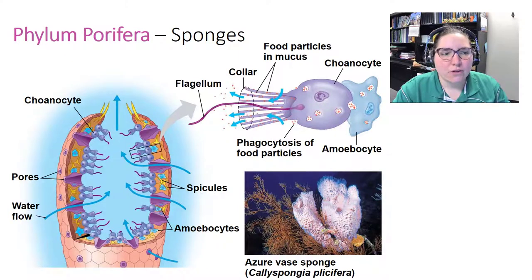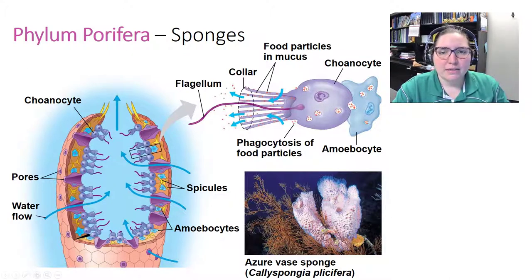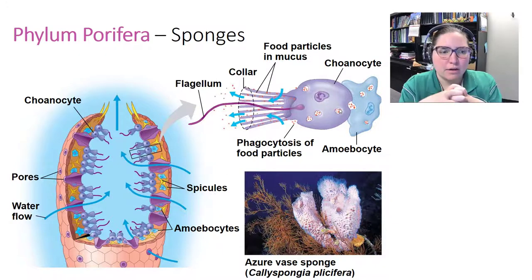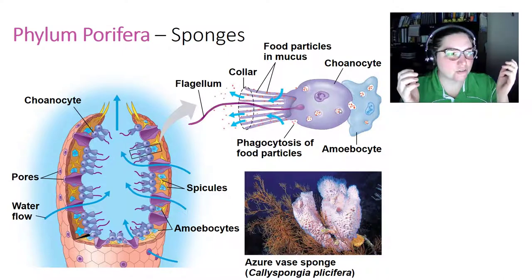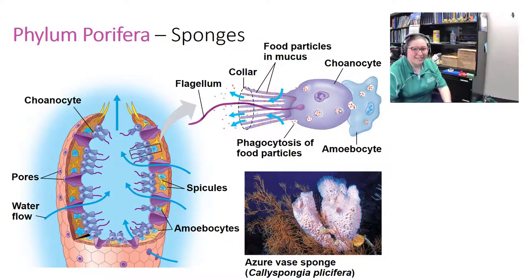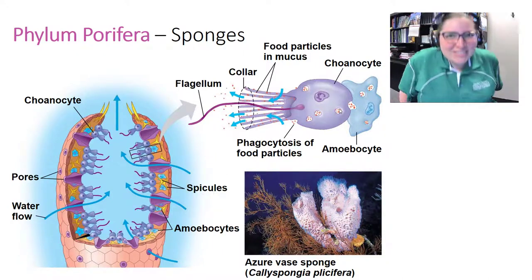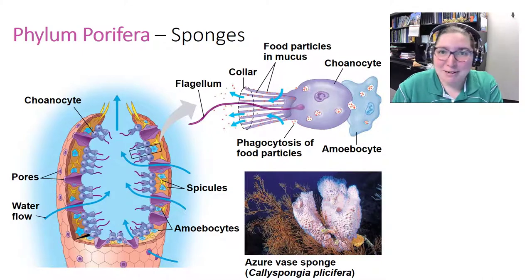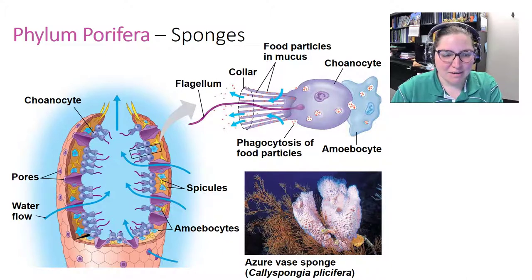Sponges are similar to free-living choanocyte protists. There's an idea that free-living choanocyte protists came together into a colony and eventually gave rise to something like a sponge. Some cells in sponges are very similar to these free-living protists.